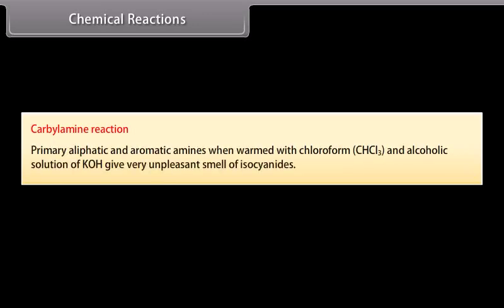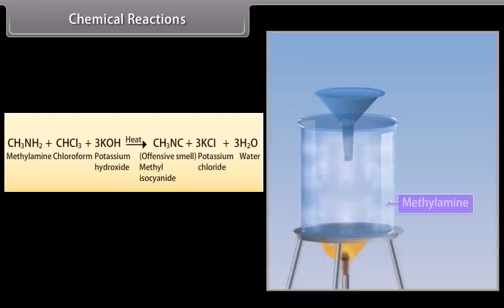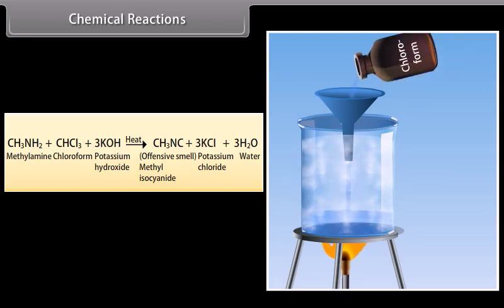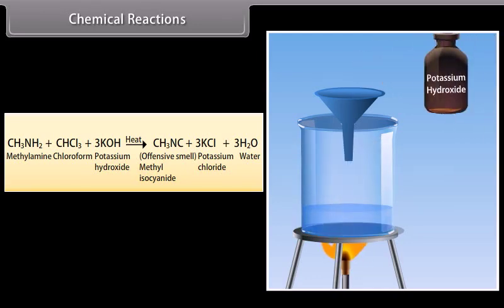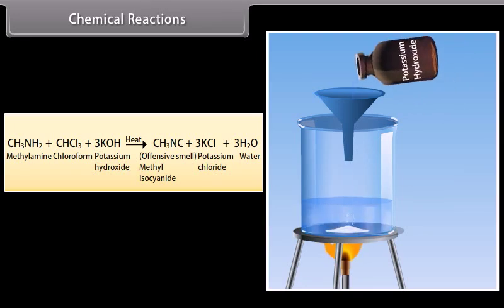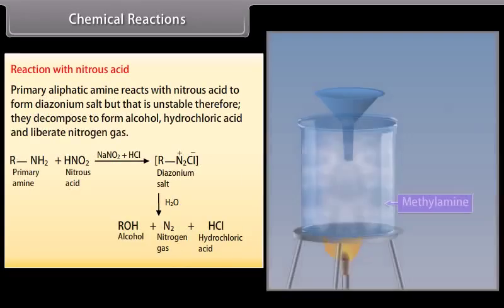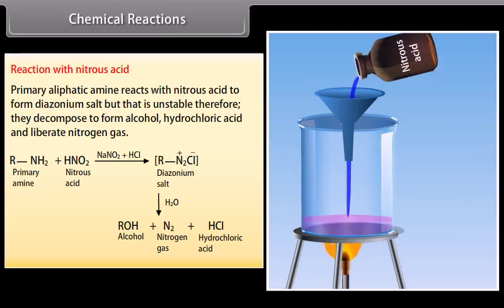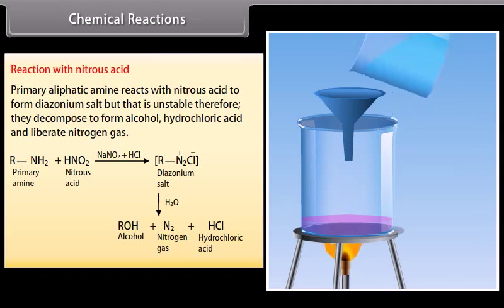Carbylamine reaction: Primary aliphatic and aromatic amines, when warmed with chloroform and alcoholic potassium hydroxide, give a very unpleasant smell of isocyanides. Chloroform and alcoholic KOH react with methylamine to form methyl isocyanide, potassium chloride, and water. Reaction with nitrous acid: Primary aliphatic amines react with nitrous acid to form diazonium salt, which is unstable and decomposes to form alcohol, hydrochloric acid, and nitrogen gas.